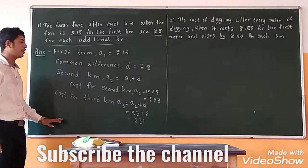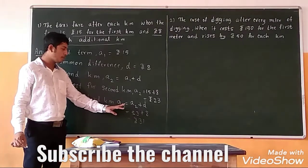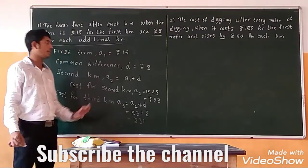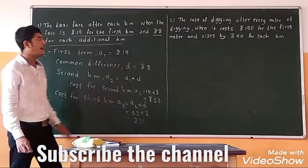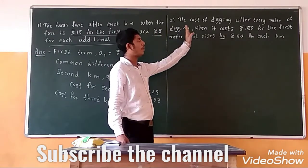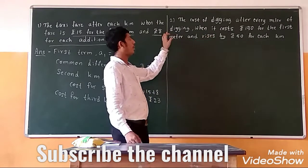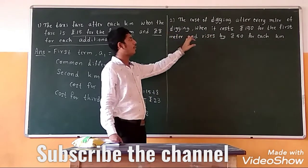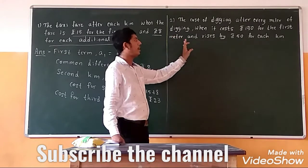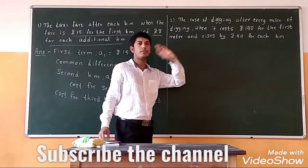Like this we will continue. For the next term we have to add rupees 8 to 31, and so it will continue. The second problem is the cost of digging after every meter of digging, where it costs 150 for the first meter and rises by 50 for each additional meter.